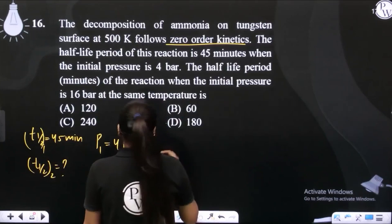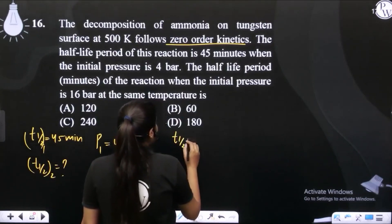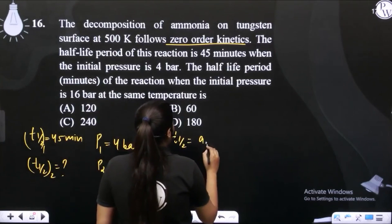So hum kya bolta hai? Jo half-life hoti hai zero order ke liye, that is basically equals to a naught upon 2k.